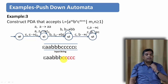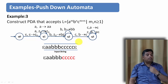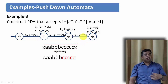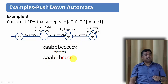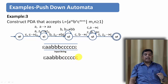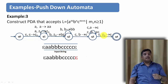When c's appear, either b or a is on top of the stack — whatever the condition, we pop the top of the stack. This eliminates the a's and b's we pushed earlier. When the final epsilon appears, if z0 is on top of the stack we pop z0 and reach the final accepted state. I hope you understood this example — you have seen how with a small difference in the language, the PDA design changes significantly.